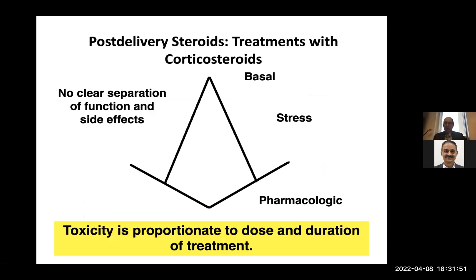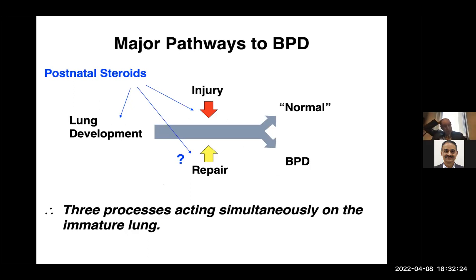Now turning to postnatal steroids: when we think about steroids there's a pharmacologic effect at the high dose range, a stress effect we all need for surgery or acute stress, and a basal level we must maintain for blood pressure. Toxicity is proportionate to dose and duration. There are major pathways in BPD that may be sensitive to steroids: lung development, injury, and repair — and when we give steroids we're probably affecting all three complex pathways simultaneously.